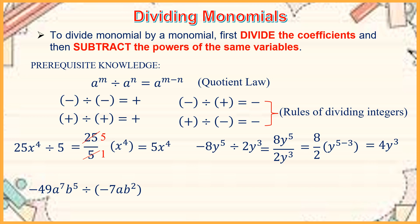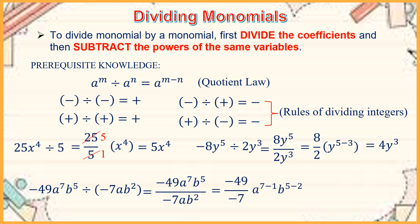Now let us have another one: negative 49a to the seventh b to the fifth divided by negative 7ab to the second power. We rewrite it as a fraction. So negative 49 divided by negative 7 gives a raised to 7 minus 1 and b raised to 5 minus 2. Simplifying further, we get 7a to the sixth b to the third, since negative 49 divided by negative 7 is positive 7.